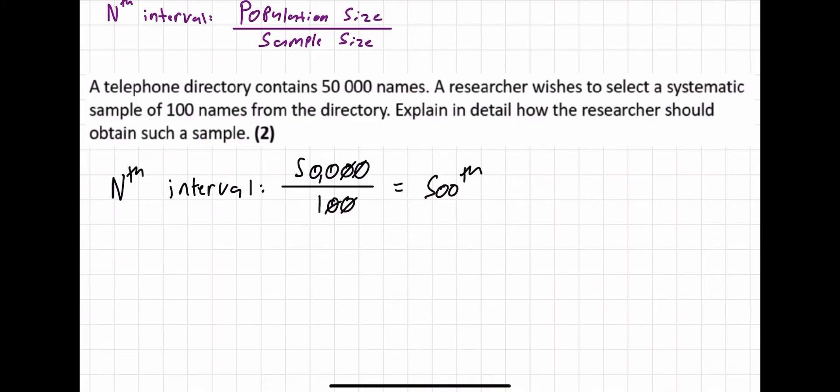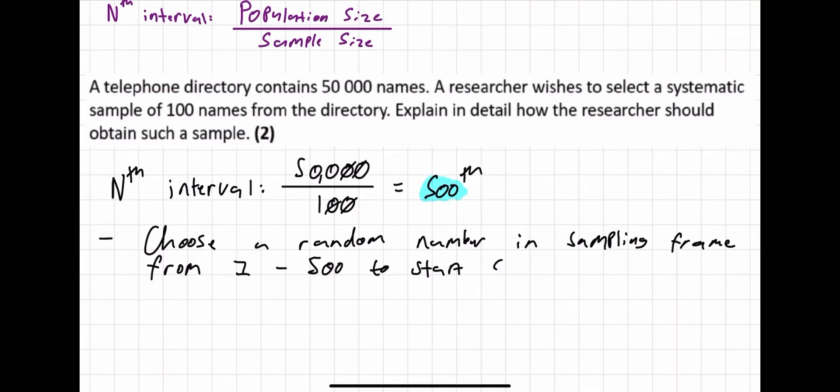Now, how you would take a systematic sample is you use this interval to begin with to choose a random number. Choose a random number in sampling frame from one to whatever your nth interval is, so 500, to start sample.